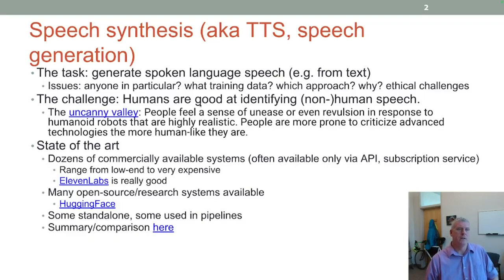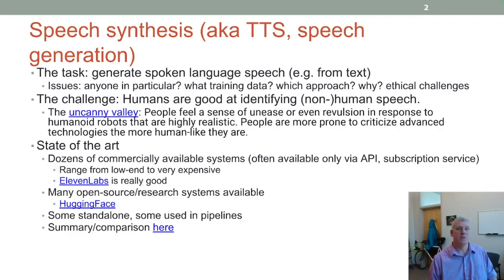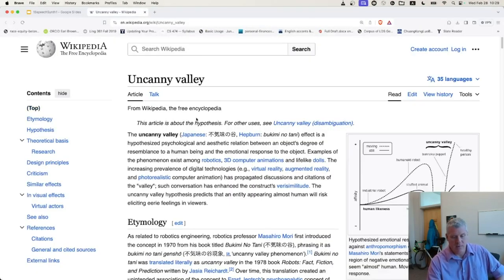There's a challenge here in that humans are good at identifying non-human speech. There's this uncanny valley — when people feel a sense of unease or even revulsion in response to humanoid robots that are too highly realistic. People are more prone to criticize advanced technologies that are more human-like. That's this idea of an uncanny valley.